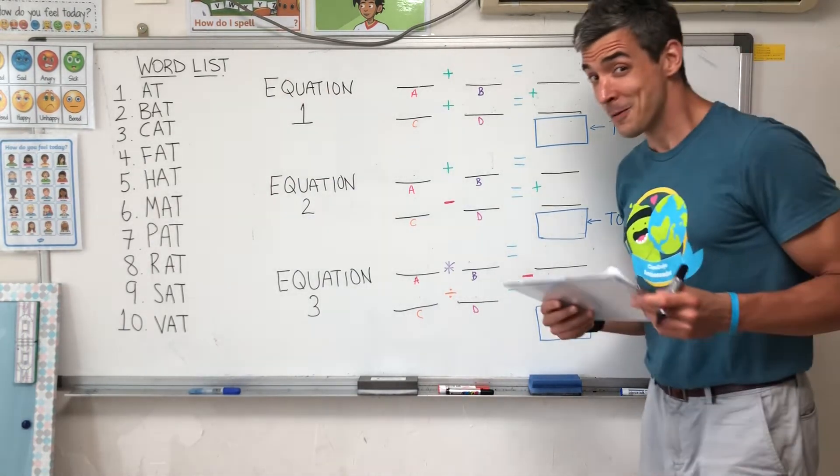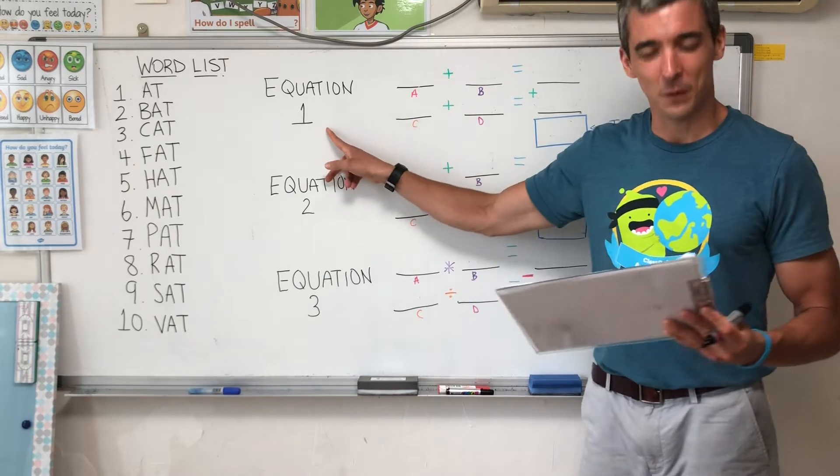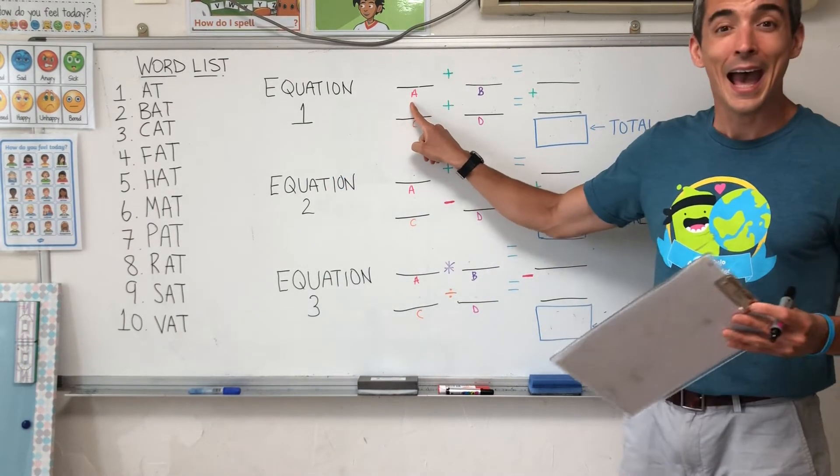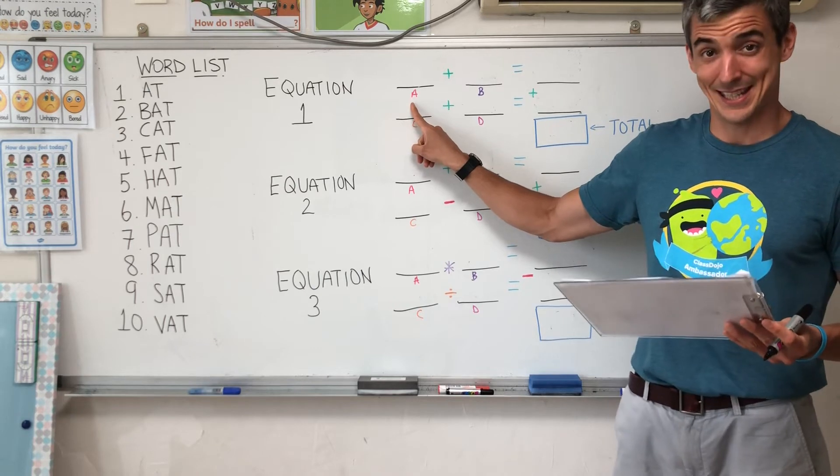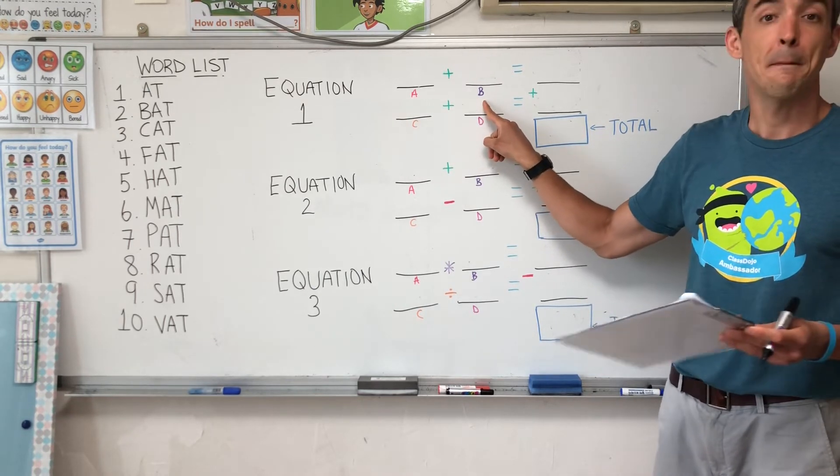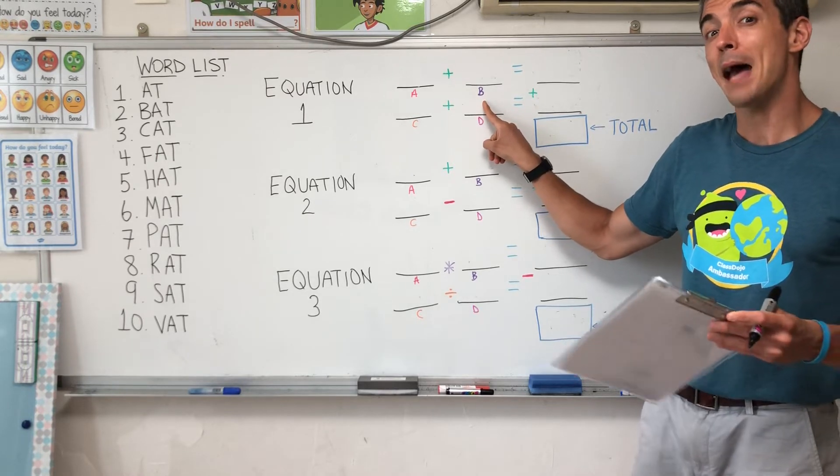Are you ready? Okay, equation number one. A is a, a, at. B, b, b, bat.